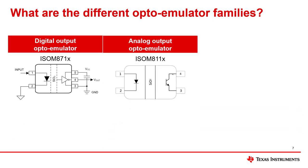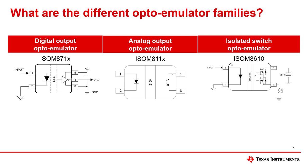The ISO-M8710 is an optoemulator that has a digital or logic output. Currently, this family is available in CMOS output or open collector output-based devices.